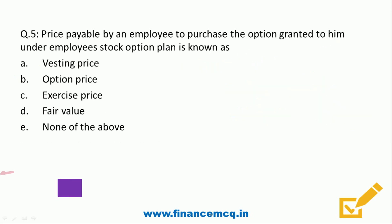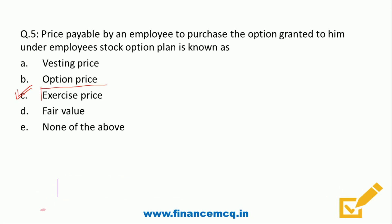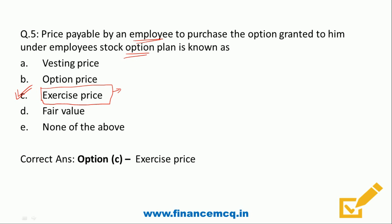Question five: the price payable by an employee to purchase the option granted under an Employee Stock Option Plan is known as — option A: vesting price, option B: option price, option C: exercise price, option D: fair value, option E: none of the above. The correct answer is option C, exercise price, because at this price the employee decides whether to exercise and purchase the shares or not.